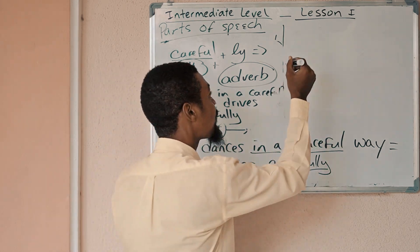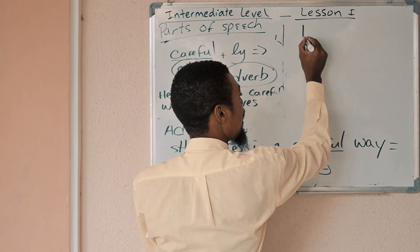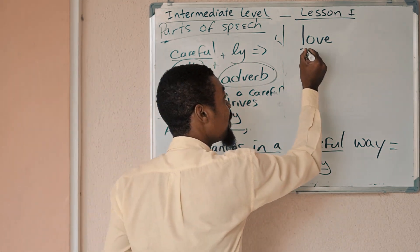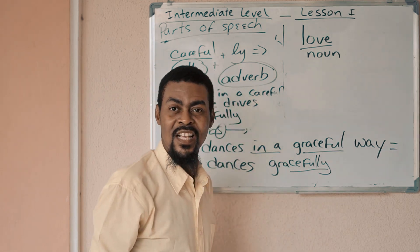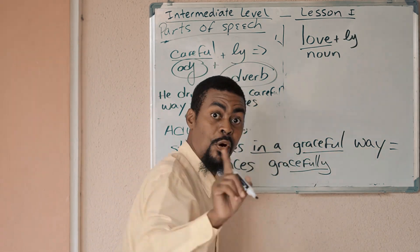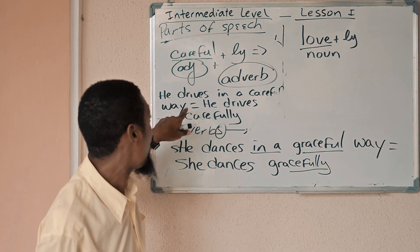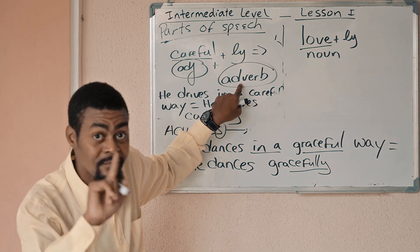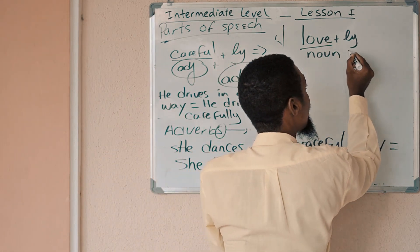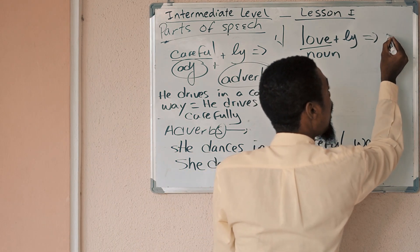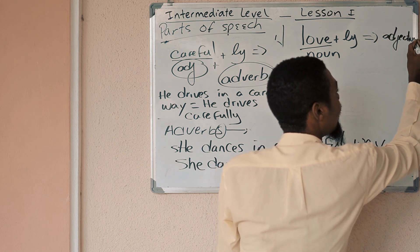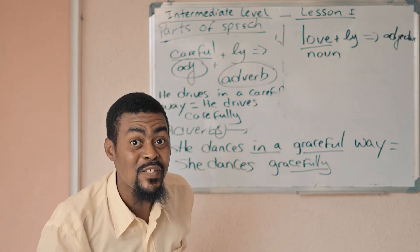Let's look at this. Love is what? Love is a noun. When someone says lovely, the person does not have an adverb — no way. This is not an adverb. When you have a noun plus LY, it becomes an adjective, not an adverb.